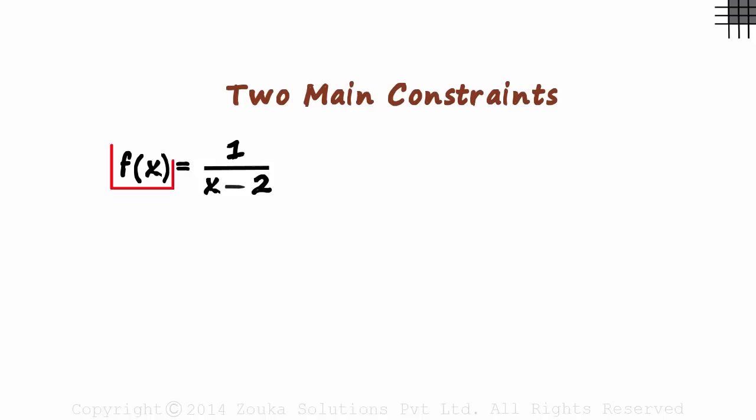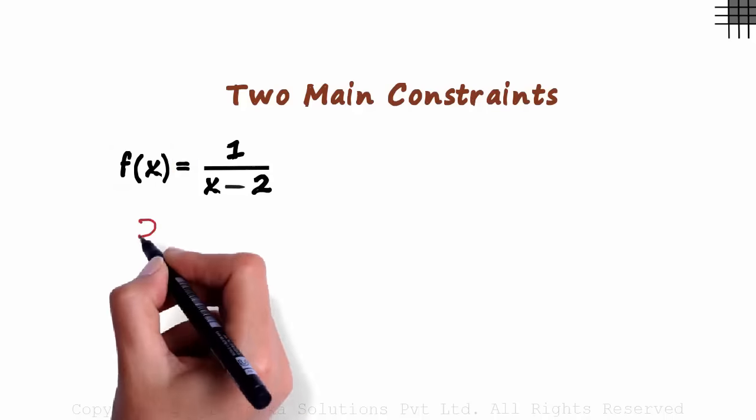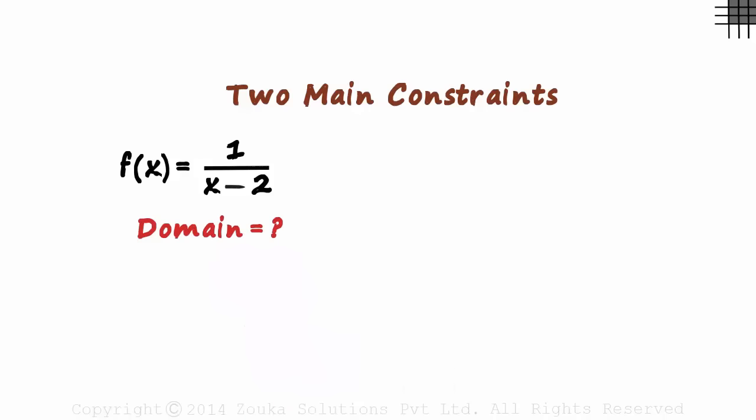To give you some good news, there are two main constraints that are very common in the exams. Look at this function. F of x is 1 over x minus 2. What is the domain of this function? Domain is the set of all possible input values. Can x take any value here?